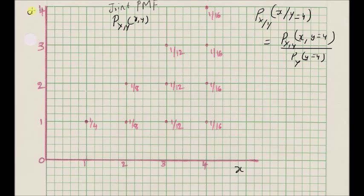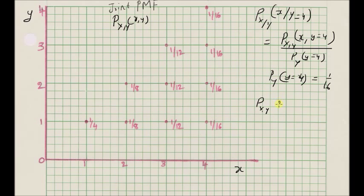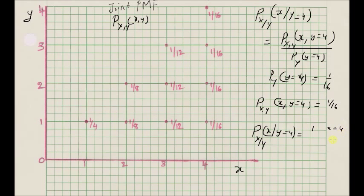Since this is the x-axis and this is the y-axis, the probability of Y = 4 is given by the sum of the values along the line y = 4. The marginal probability mass function at Y = 4 equals 1/16, and the joint mass function P_{X,Y}(x, 4) along this line is also 1/16. The ratio is therefore equal to 1. Thus, the conditional probability mass function P_{X|Y}(x | y = 4) equals 1 for x = 4, and 0 otherwise.